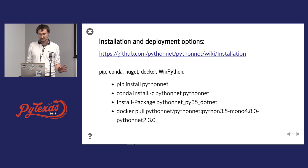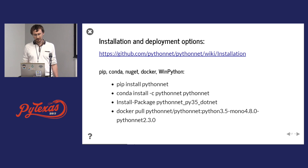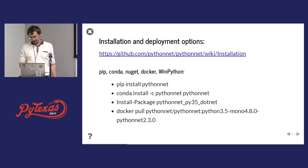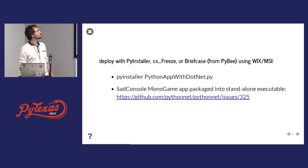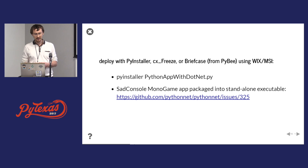One thing we've made very easy is installing Python.NET. You can install it with pip, you can do a conda install — conda currently only for Windows. You can use NuGet, the .NET package manager, and we also have Docker images. Deploying is also easy — you can build executables with Python.NET using PyInstaller or CX Freeze. Most recently the Briefcase project uses a WX MSI installer.